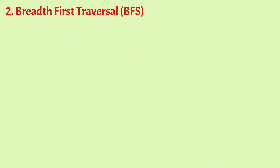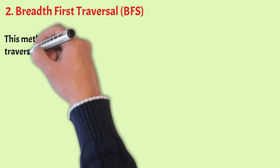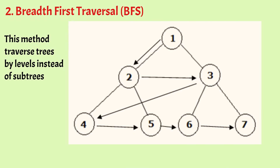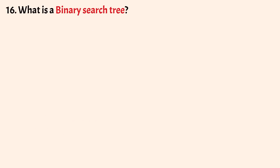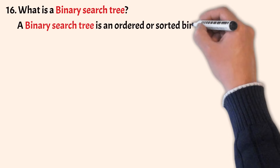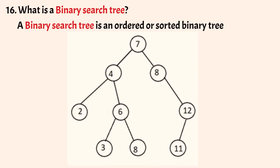Breadth first traversal traverses trees by levels instead of subtrees. First visit the root node, then visit all child nodes of the root from left to right, and then go down all levels in the same manner until reaching the leaf nodes. What is a binary search tree? A binary search tree is an ordered or sorted binary tree that allows us to maintain a sorted list of numbers to quickly search for a number. The rule is: the value of the left child node is always less than the value of its parent node.